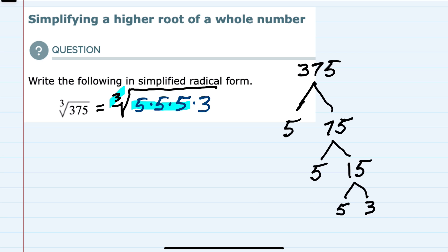So those 3 5s can come outside the radical as a single 5, leaving me with the cubed root of the 3 that's still underneath the radical. So our simplified expression is 5 cubed root of 3.